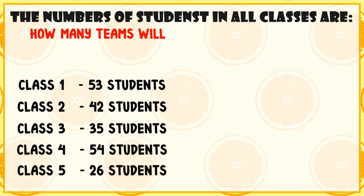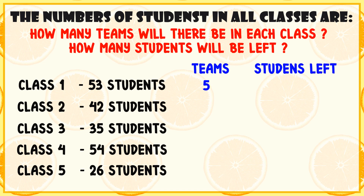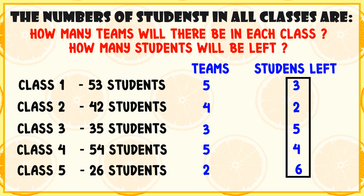How many teams will there be in each class and how many students will be left? Class 1: 5 teams, 3 students left. Class 2: 4 teams, 2 students left. Class 3: 3 teams, 5 students left. Class 4: 5 teams, 4 students left. Class 5: 2 teams, 6 students left. In all, 20 students are left, and 2 more teams can be made. Well done, kids!